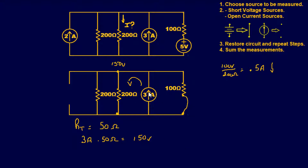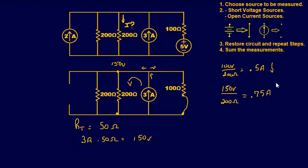Current from the 3-amp source flows in one direction — into one leg and out the others. Using Ohm's Law: 150 volts over 200 ohms equals 0.75 amps, flowing downward through the 200-ohm resistor. Step three: restore the circuit and repeat.